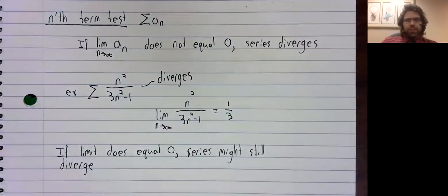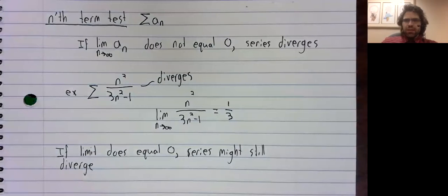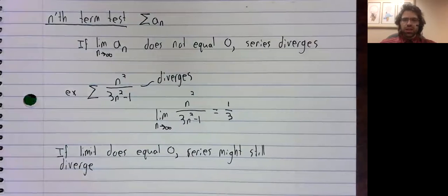If the limit equals zero, we don't know anything. It might converge, it might diverge. The nth term test tells us nothing.